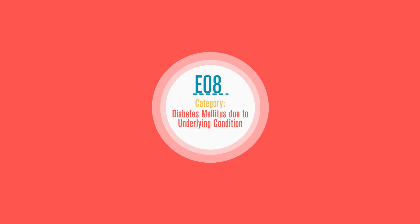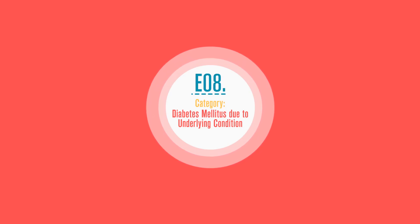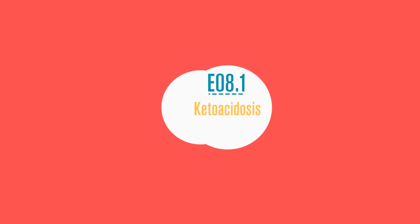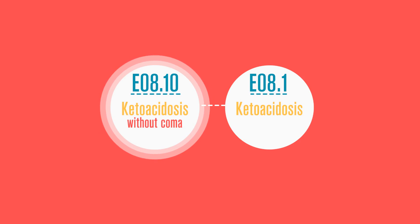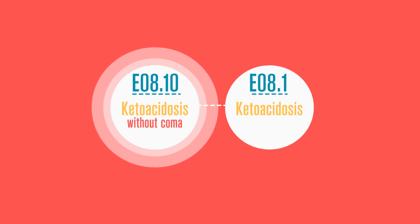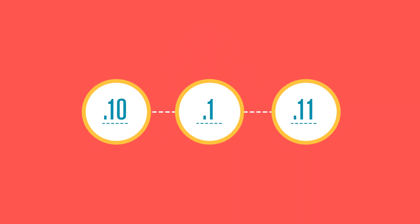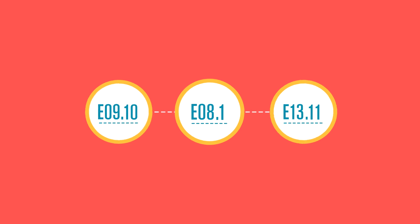Let's say a patient has diabetes due to an underlying condition. That's code E08, followed by a decimal point. Next come the details in the form of subcategories, starting with the fourth digit. Ketoacidosis, for example, has a fourth digit of 1. To add even more detail, a fifth digit of 0 is ketoacidosis without coma, and a fifth digit of 1 is ketoacidosis with coma. These subcategories stay the same, no matter what type of diabetes is being described.